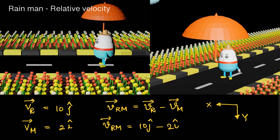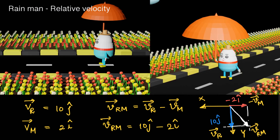Velocity of rain with respect to man equals velocity of rain minus velocity of man, from the relative velocity formula. So velocity of rain with respect to man equals 10 ĵ minus 2 î. The velocity of rain is 10 ĵ and we subtract the velocity of man, which is 2 î, giving minus 2 î. The resultant of these two vectors gives the direction in which rain appears to fall with respect to the man.